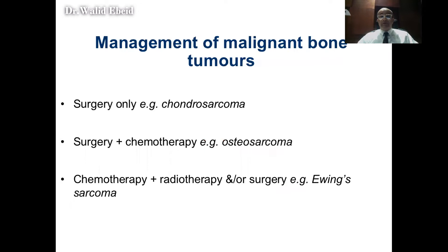Different bone tumors are treated differently. Tumors like chondrosarcomas are treated with surgery alone. Osteosarcoma is treated by both surgery and chemotherapy, whereas Ewing sarcoma is treated by chemotherapy and either surgery or radiotherapy as a local treatment.